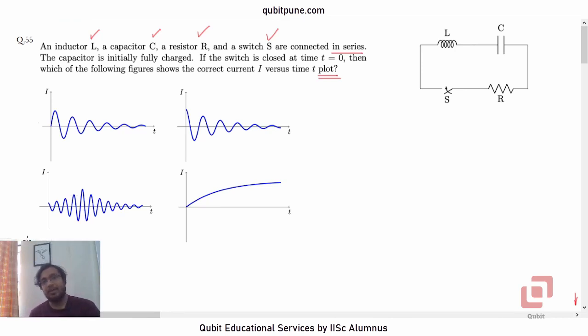Remember, if resistance were absent, if R were equal to 0, then the moment we close the switch, assuming that the wires also have zero resistance and there is no loss due to electromagnetic radiation, then we will get LC oscillations, correct? LC oscillations.